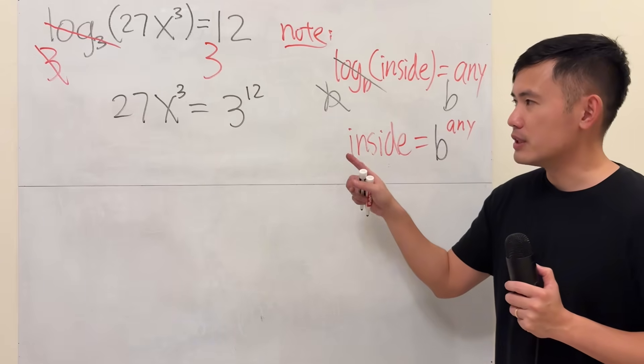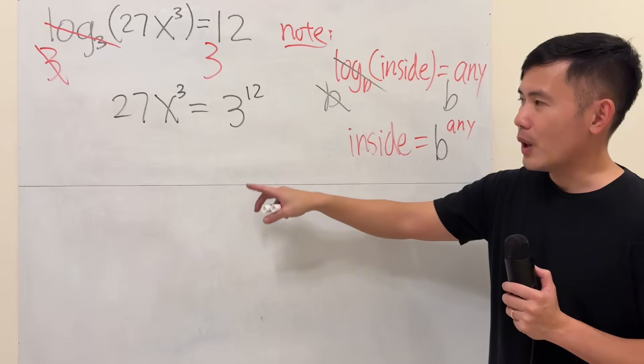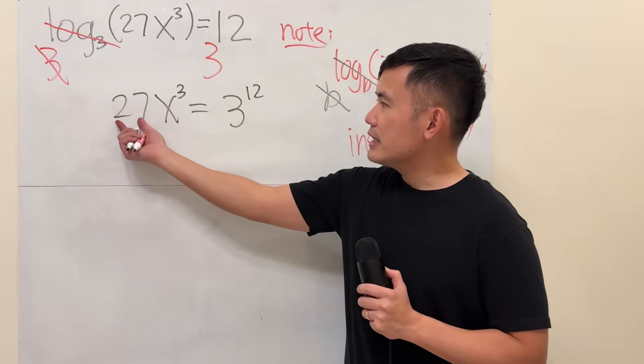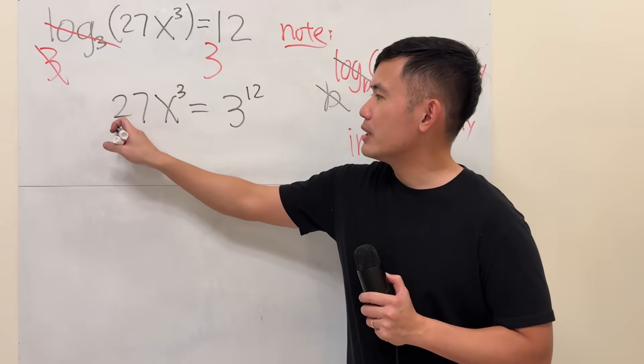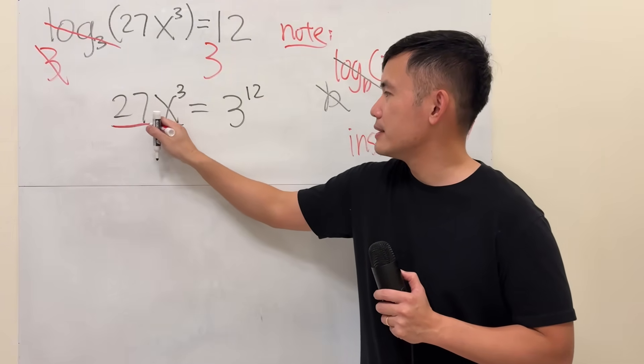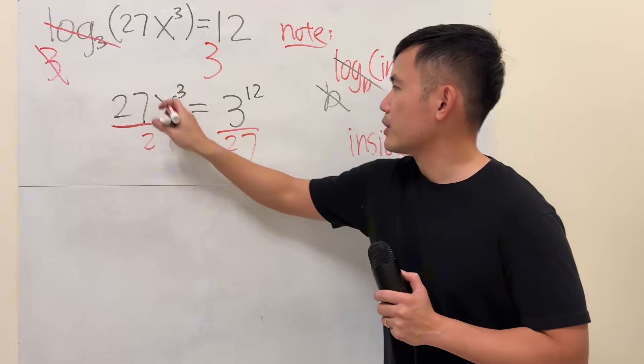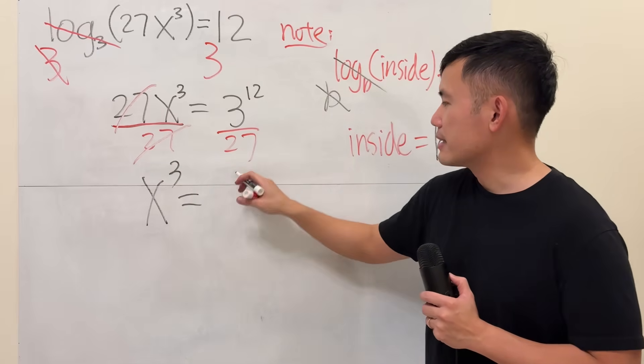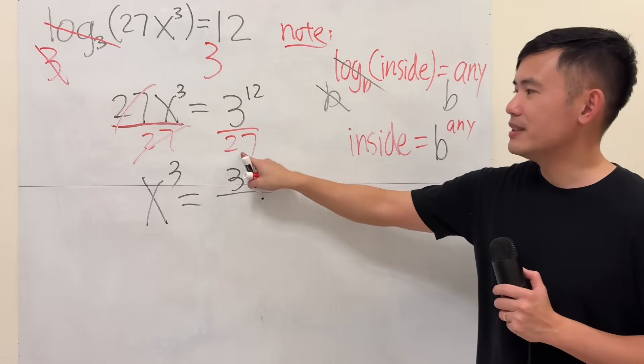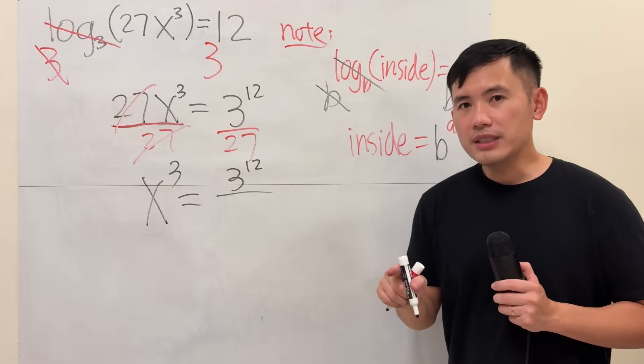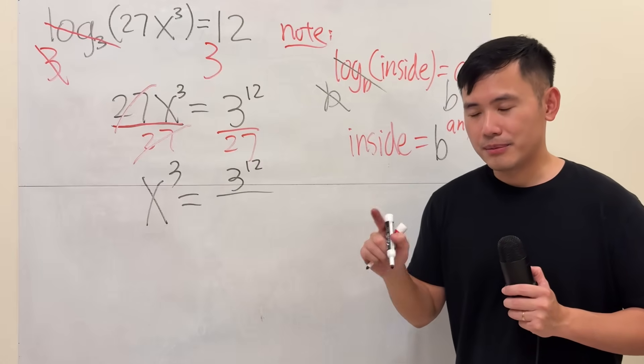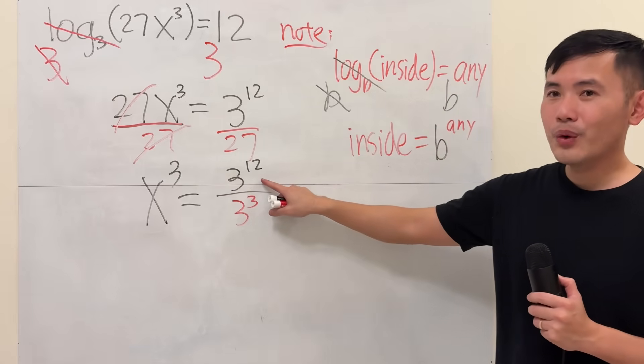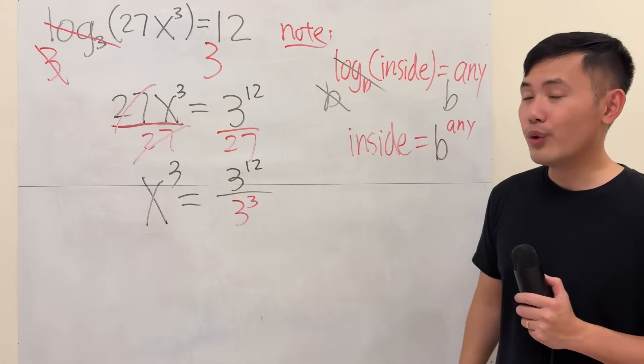We will be utilizing rule of exponents. But anyways, 27 times this is equal to that. I will divide both sides by 27. So they cancel. So x to the 3rd power equals, on the top is 3 to the 12th power. But what's this? 27 is the same as 3 times 3 times 3, which is 3 to the 3rd power. Right? And then what we can do next is, we can use the rule of exponents.